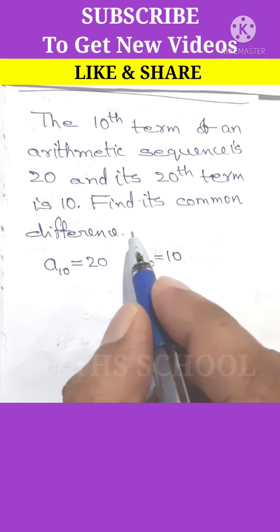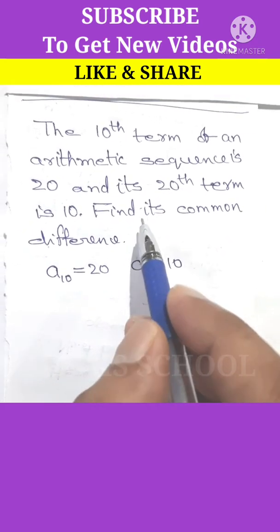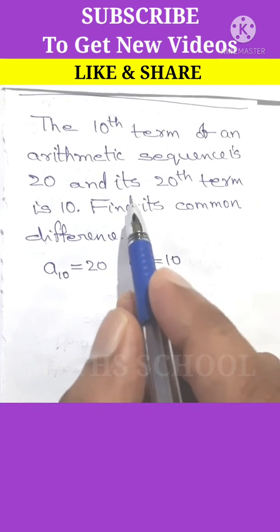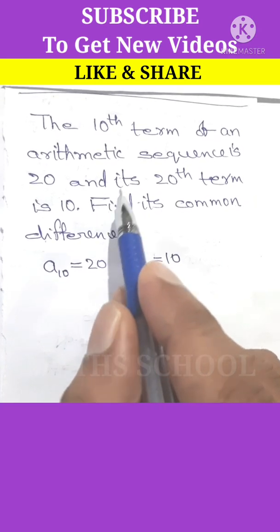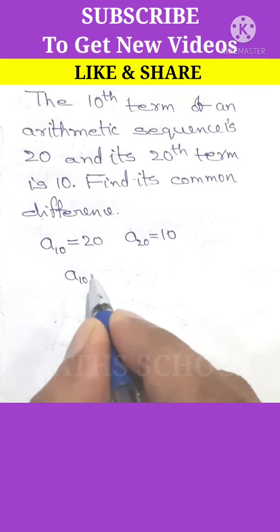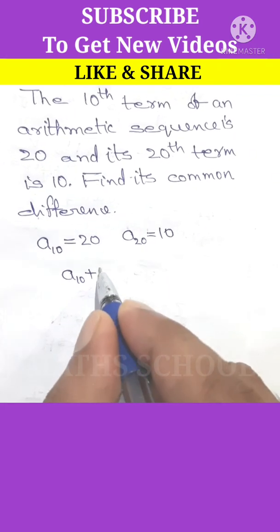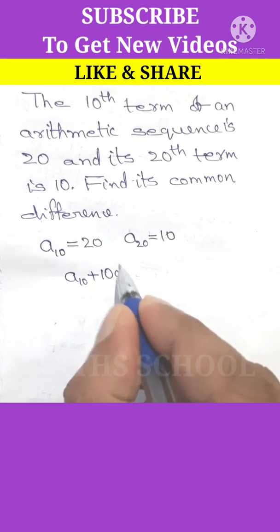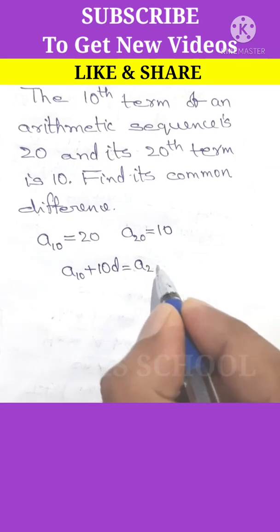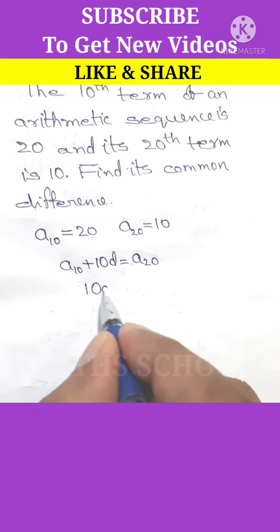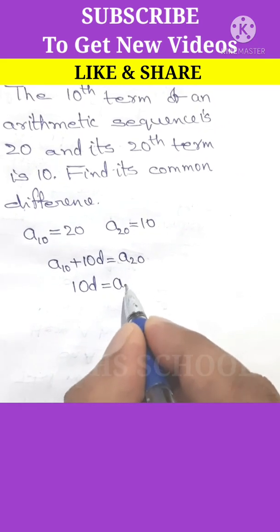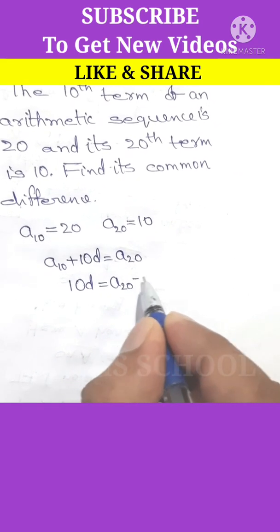Let d be the common difference. To obtain the 20th term, we add 10 times d to the 10th term: a10 + 10d = a20, or 10d = a20 - a10.